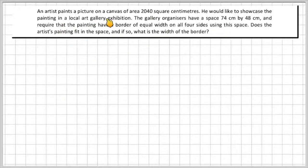So an artist paints a picture on a canvas of area 2040 square centimeters. He would like to showcase the painting in a local art gallery exhibition. The gallery organizers have a space of 74 centimeters by 48 centimeters and require that the painting have a border of equal width on all four sides using this space. Does the artist's painting fit in the space? And if so, what is the width around the border?